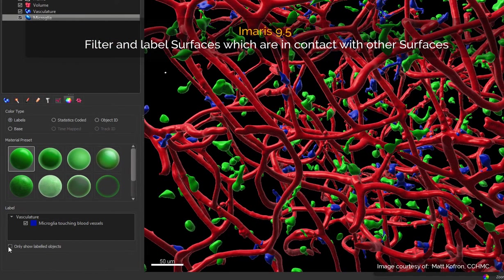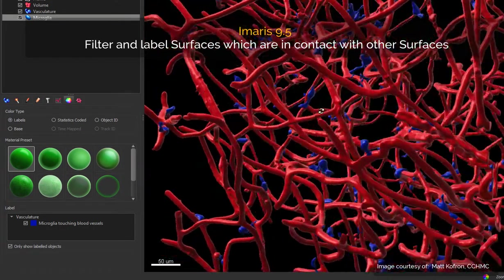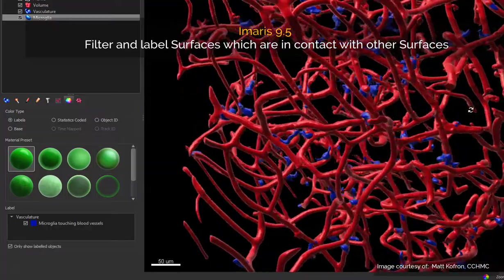You can now show only those microglia which are in contact with blood vessels by choosing show only labeled objects in the color tab.